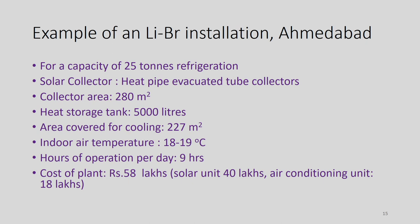An example already installed in Ahmedabad: for a 25-tonnage refrigeration capacity, the solar collector type is heat pipe evacuated tube collectors, collector area is about 280 square meters, heat storage tank capacity is about 5,000 liters, area covered for cooling is about 227 square meters, indoor air temperature is 18–19°C, hours of operation per day is 9 hours, and cost of the plant is 58 lakhs (solar unit: 40 lakhs, air conditioning unit: 18 lakhs).